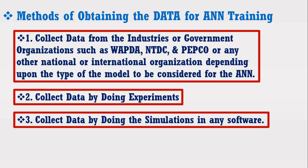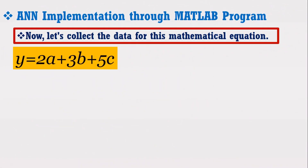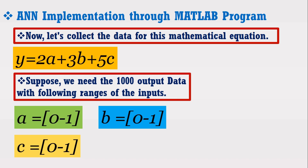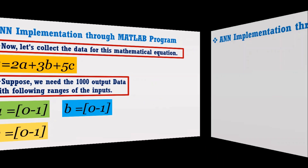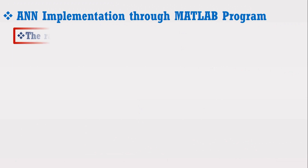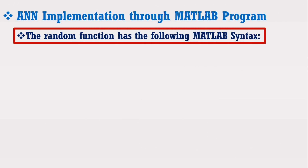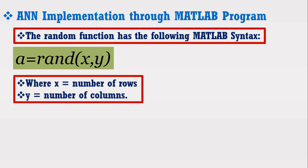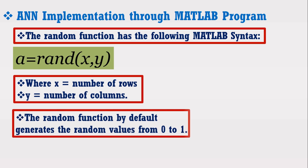Now let's collect the data for this mathematical equation. Suppose we need one thousand output data samples with inputs a, b, and c ranging from 0 to 1. To get one thousand data samples, we are going to use the random function of MATLAB, which generates different numbers of samples within a given range. The MATLAB syntax uses rand(x, y), where x shows the number of rows and y shows the number of columns, and rand by default generates random numbers from 0 to 1.